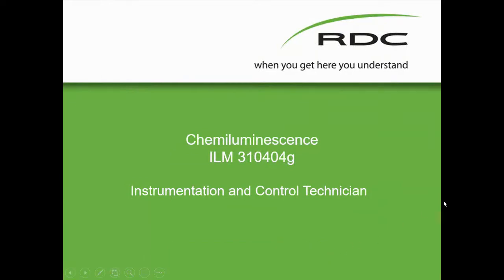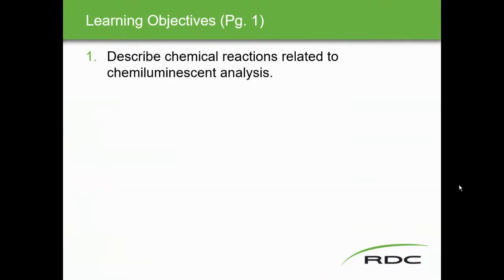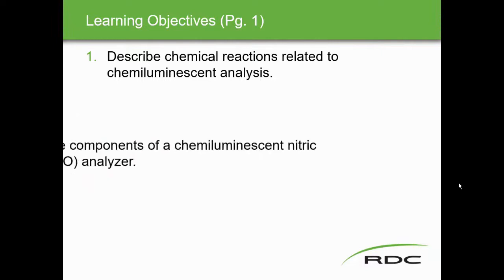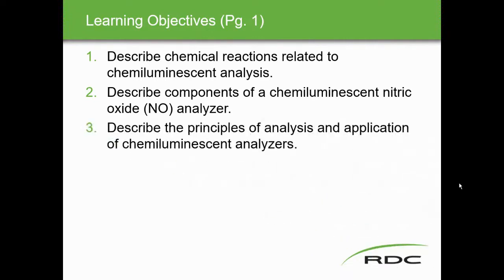Alright, we see chemiluminescence ILM310404G. Learning objectives: describe chemical reactions related to chemiluminescent analyzers, describe the components of a chemiluminescent nitric oxide (NO) analyzer, and describe the principle of analysis and application of chemiluminescent analyzers.